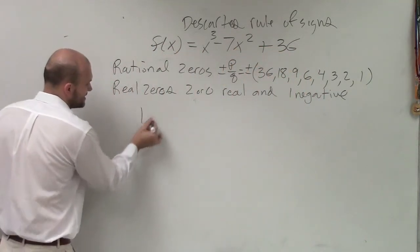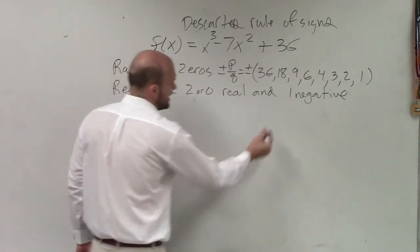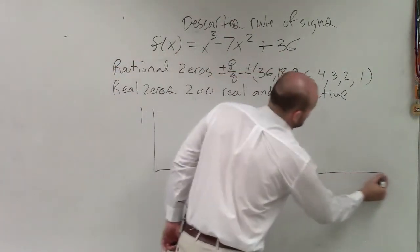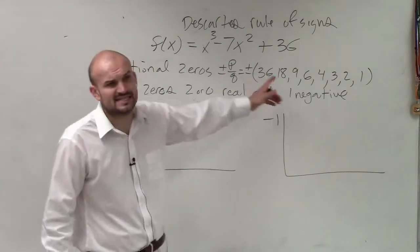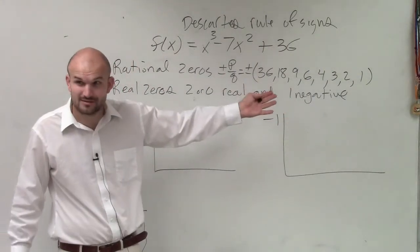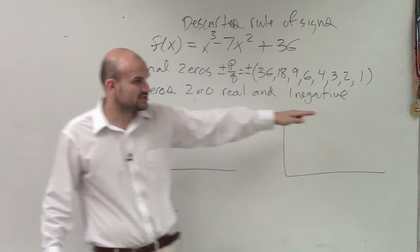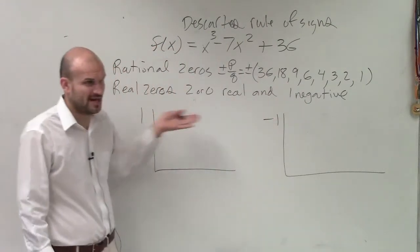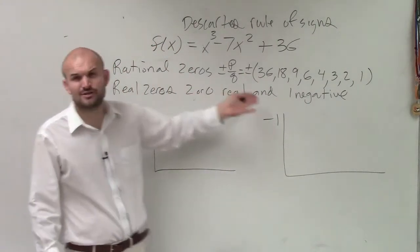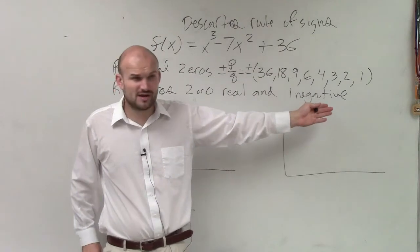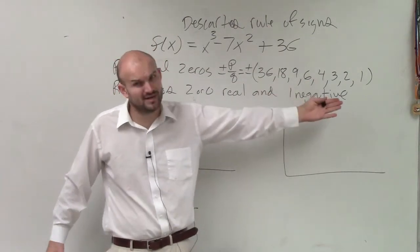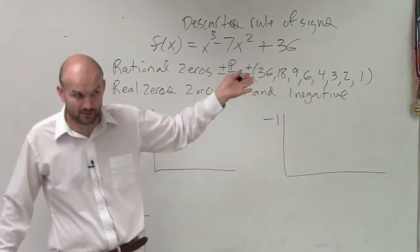I can use synthetic division. So all of us use 1 and negative 1. Why do synthetic division for 36 off the bat? You can do it, but why check 36 first? Let's check 1 and negative 1. Would everybody agree 1 and negative 1 are probably your easiest? Especially if you have fractions here, you're going to want to do 1 and negative 1 before you do a fraction.